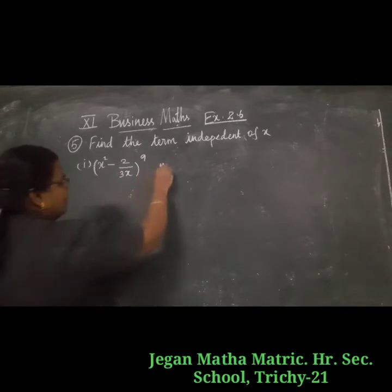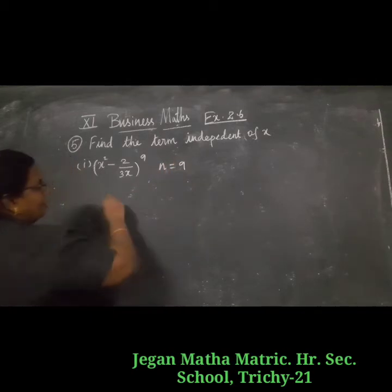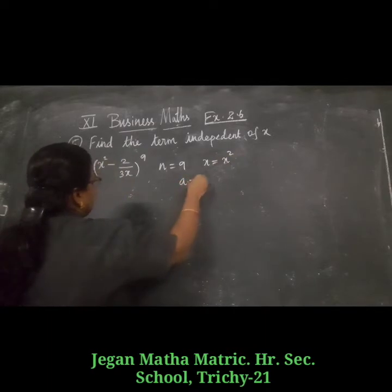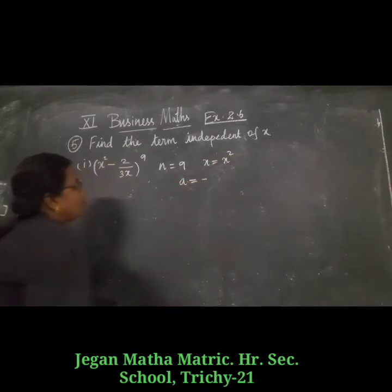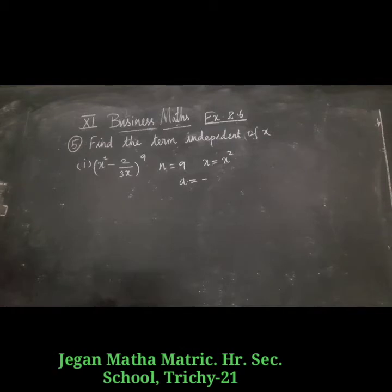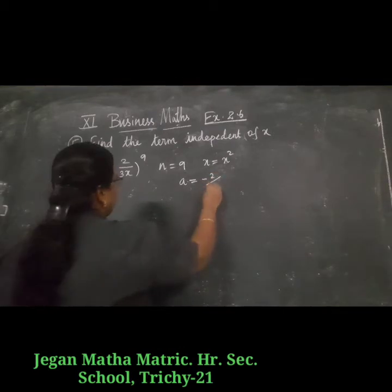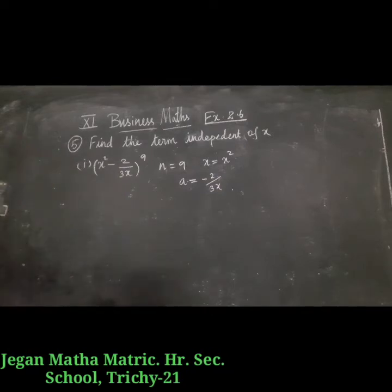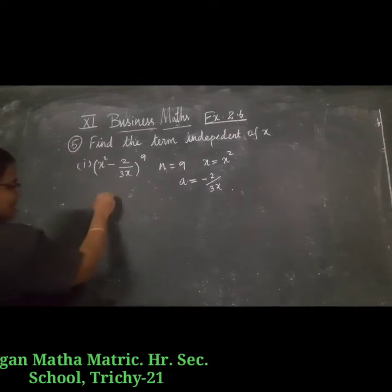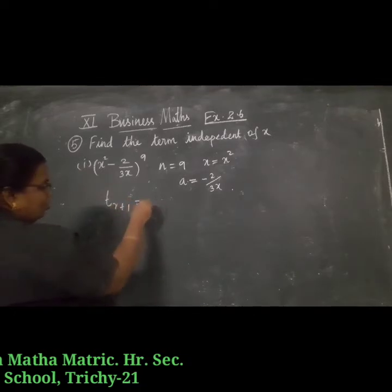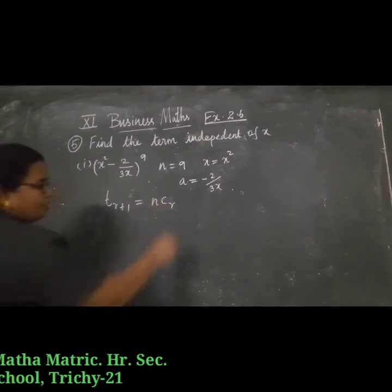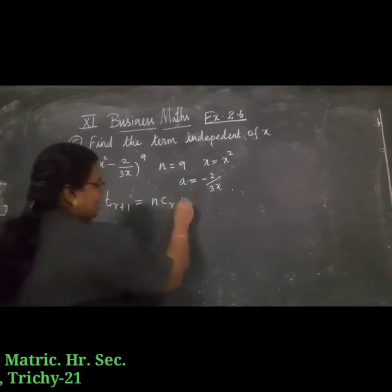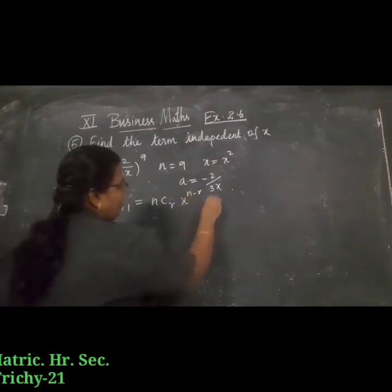Here, n is equal to n, x is equal to x squared, and a is equal to minus 2 divided by 3x, because minus is here. The general term formula is: t(r+1) is equal to nCr, x power n minus r, into a power r.